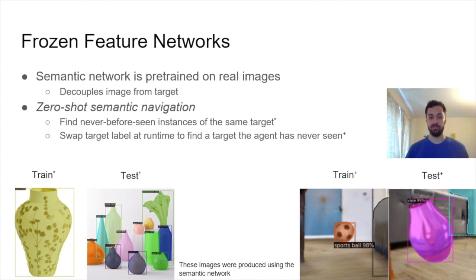Our semantic network is pre-trained on real images as well. This allows us to decouple the input image from the target we're navigating to. This allows for this term I coined earlier, zero-shot semantic navigation. It allows us to find never-before-seen instances of the same target. Over here on the left, we can train on this specific vase, and we can navigate to any one of these vases, having never seen them before.